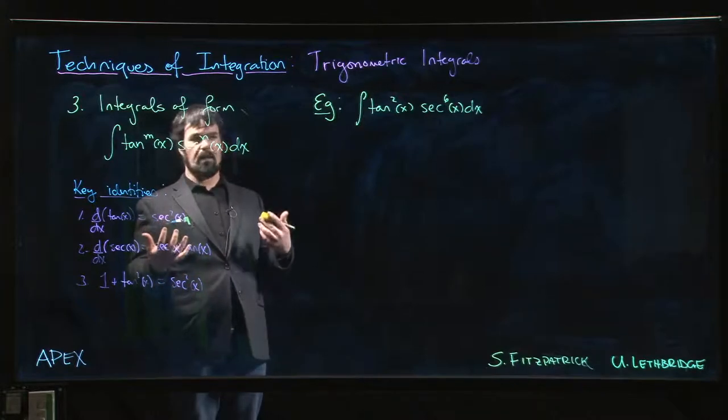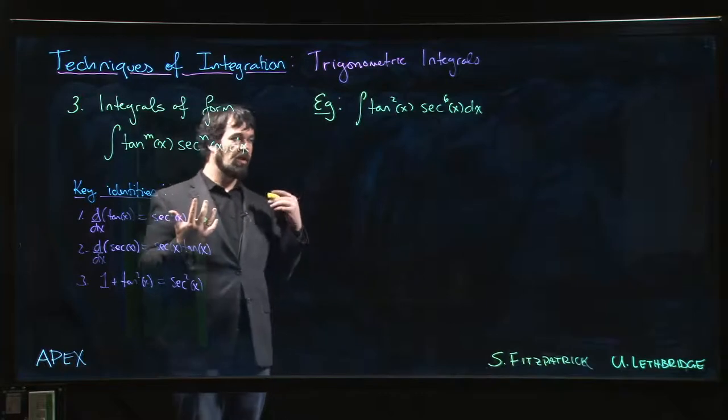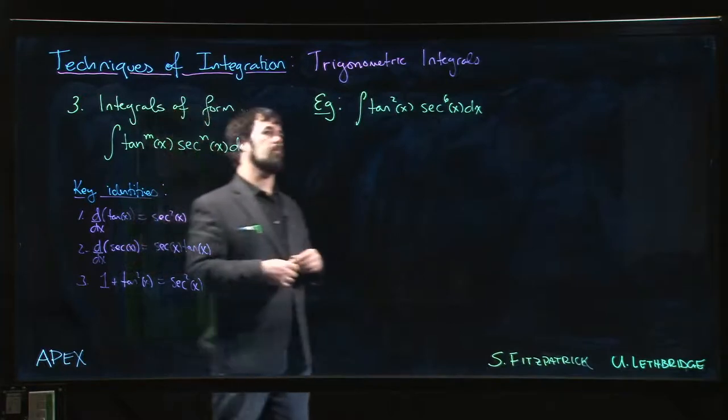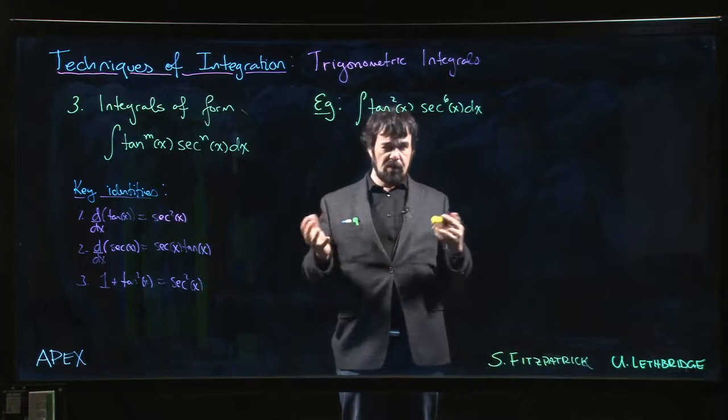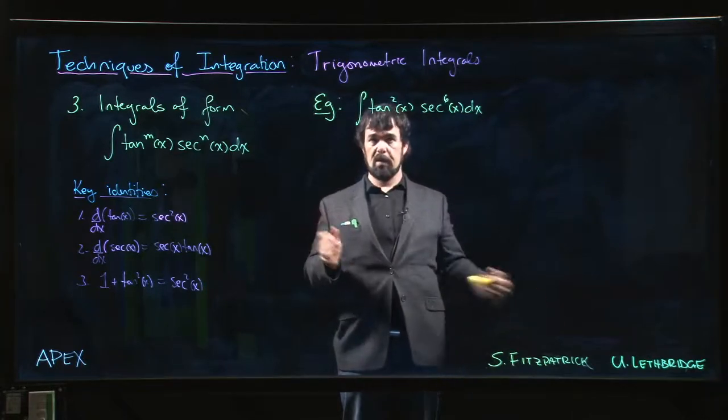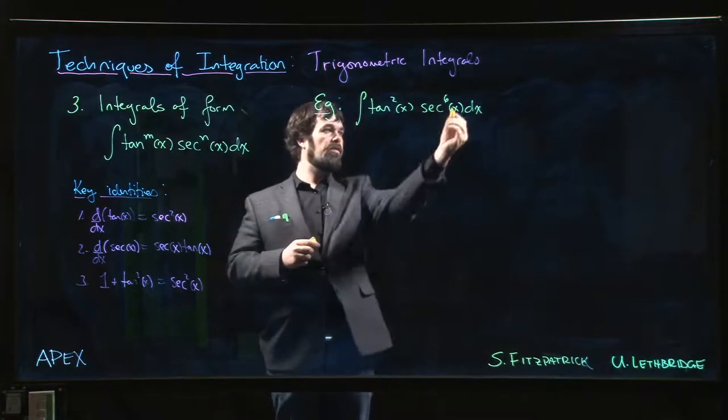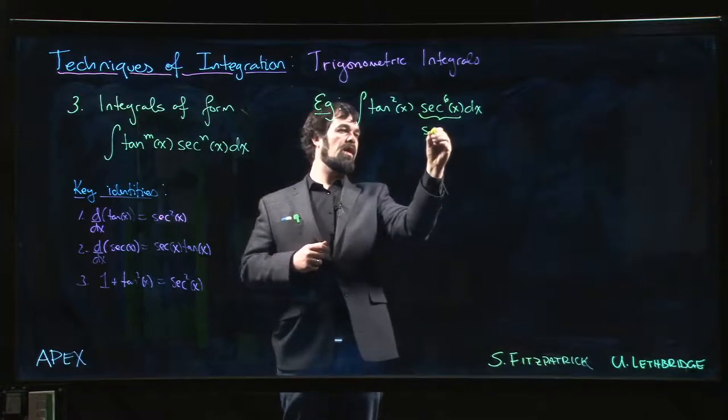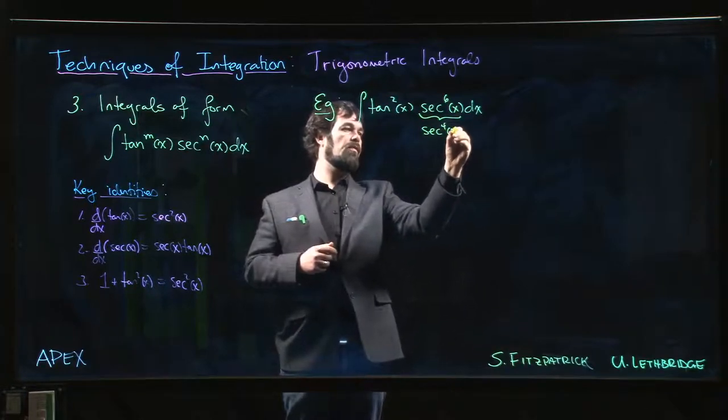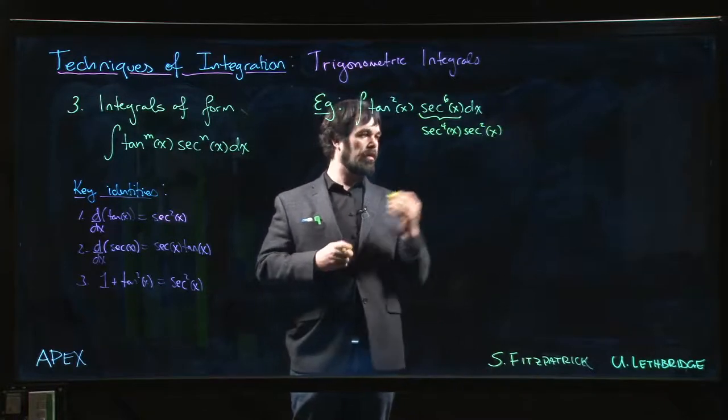And often, if the powers work out right, you can look for a u-substitution. So in particular, if you have an even power of secant, integrals with even powers of secant are probably the most straightforward, because what you can always do is you can split off two of those, write that as secant to the fourth x times secant squared.